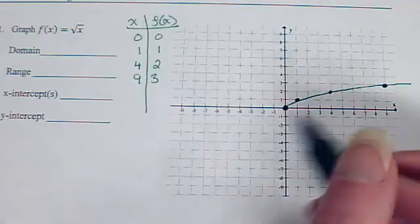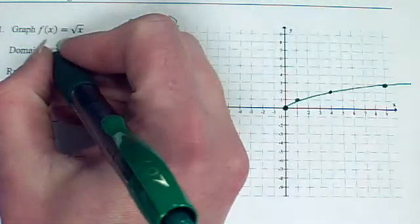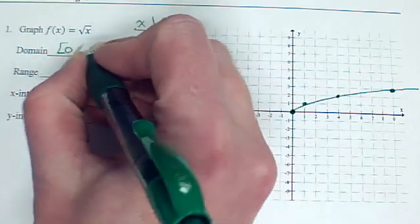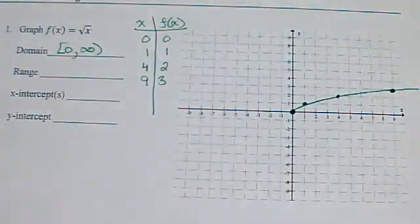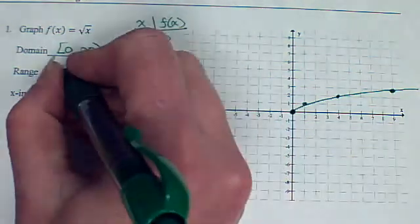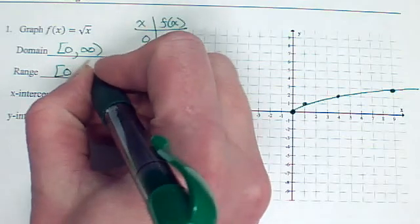So what is our domain here? Well, it's 0 to infinity. So I could say that x is greater than or equal to 0. Or I can use our notation, interval notation. Our range, our output on our rational function is only positive numbers. So it's 0 to infinity.